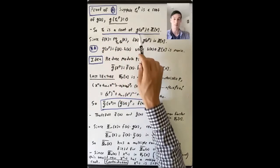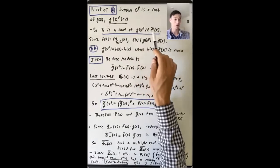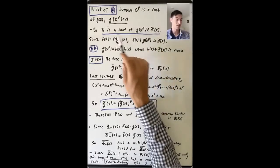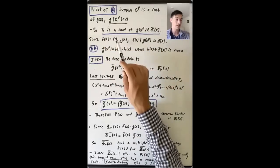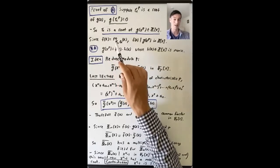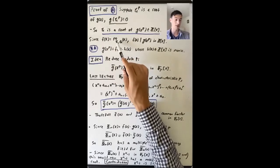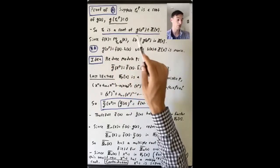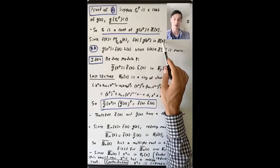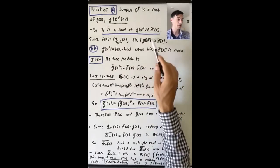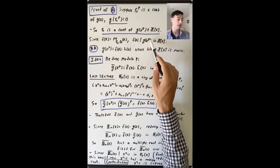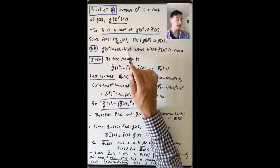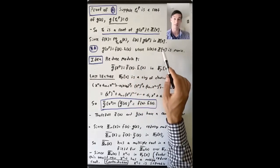What does that mean? Zeta is a root of the polynomial g(x^p) — this is a polynomial in Z[x] where every time we see an x, we put in x to the p instead. Now zeta is a root of that. But f(x) is a monic irreducible polynomial that had zeta as a root, so it is the minimal polynomial for zeta over Q. So g(x^p) is some polynomial that has zeta as a root, so the minimal polynomial f(x) has to divide it in Z[x]. If f(x) divides g(x^p), that means g(x^p) equals f(x) times h(x), where h(x) is a monic polynomial in Z[x] as well.